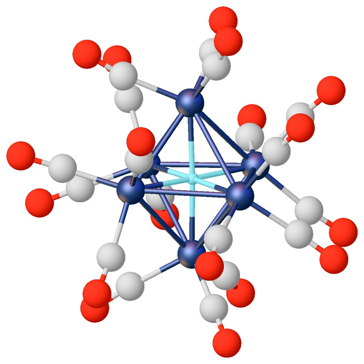Hydrides such as sodium hydride and potassium hydride are used as strong bases in organic synthesis. The hydride reacts with the weak Brønsted acid releasing H2. Hydrides such as calcium hydride are used as desiccants, i.e. drying agents, to remove trace water from organic solvents. The hydride reacts with water forming hydrogen and hydroxide salt.